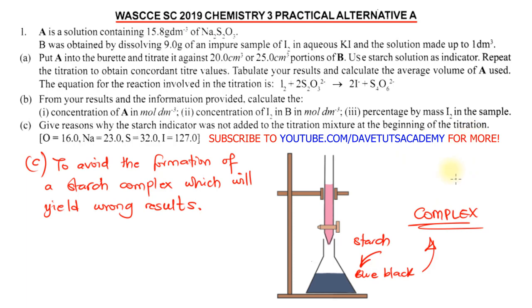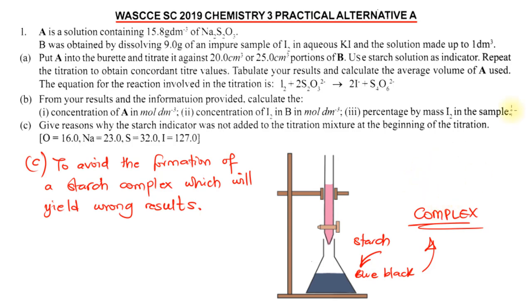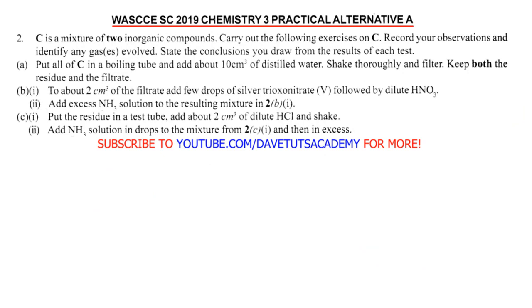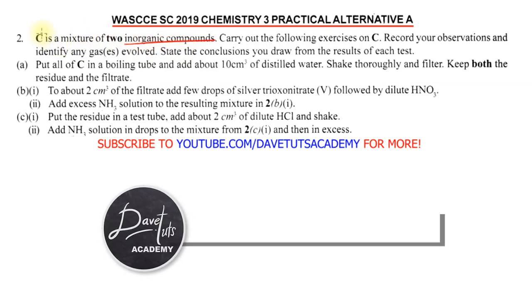With this, we have come to the end of the solution on iodometric titration from the WAEC 2019 chemistry practical. Now we are going to look at the qualitative analysis from the WAEC 2019 chemistry practical exam, meaning we will be looking at the identification of anions and cations from two inorganic compounds.